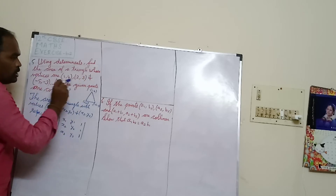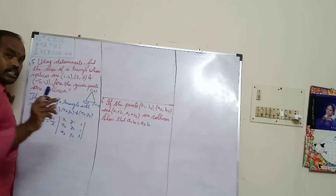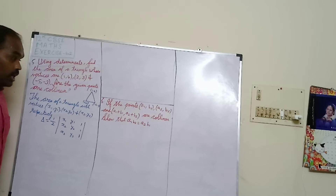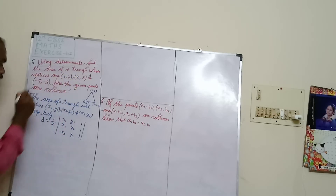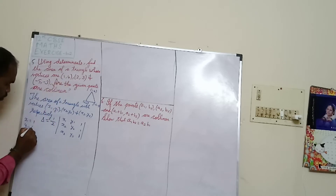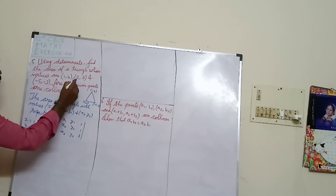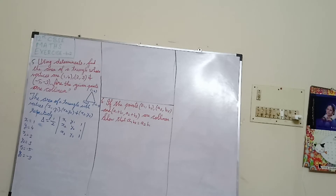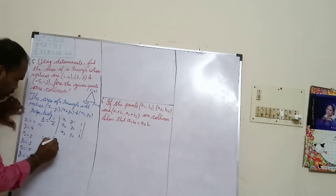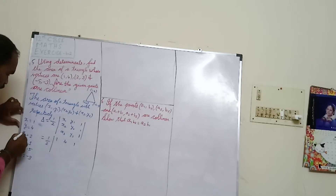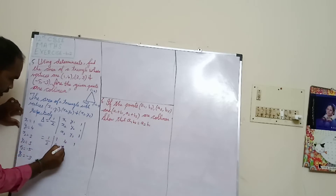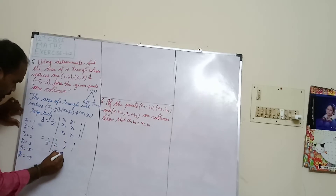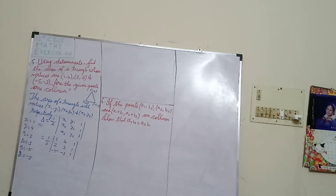Whenever the points are given, the first coordinate is x and the second is y. So here, x1 = 1, y1 = 4, x2 = 2, y2 = 3, x3 = -5, y3 = -3. Now we calculate the determinant value.